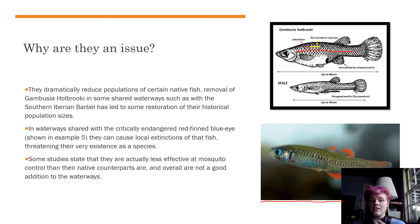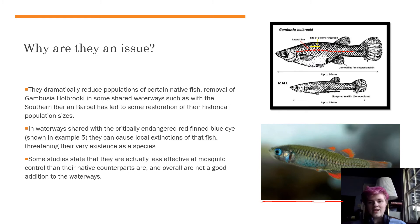In places where there are red fin blue eyes — shown in the corner — Gambusia are out-competing them extraordinarily and causing them to go extinct in certain areas. These fish are already critically endangered, so they're not doing well. On top of all of that, Gambusia are not even as effective at catching mosquitoes as a lot of their native counterparts are, so this is just not a good situation.